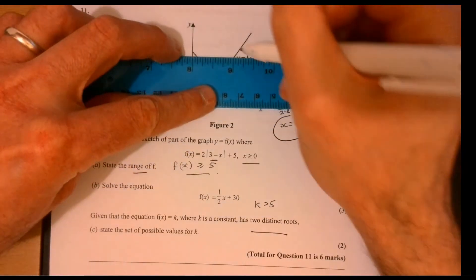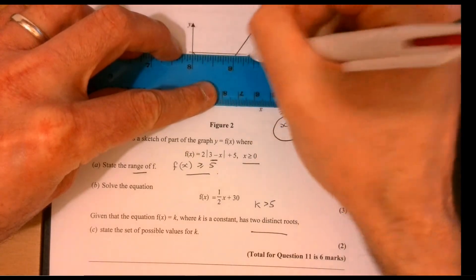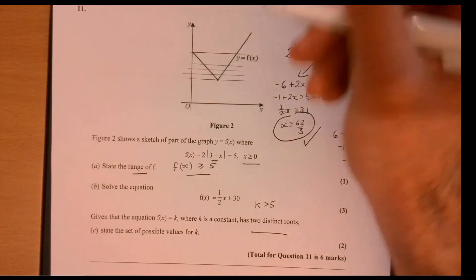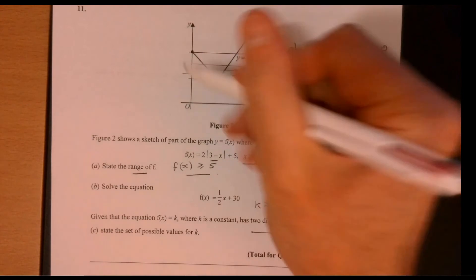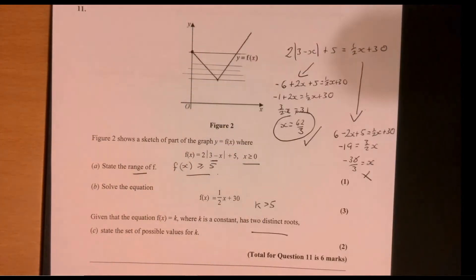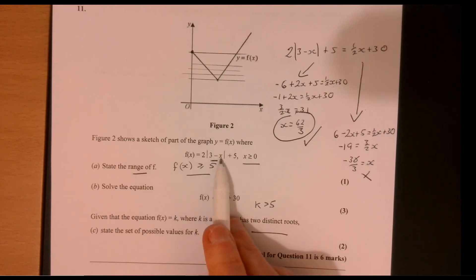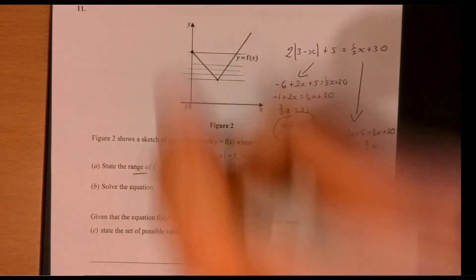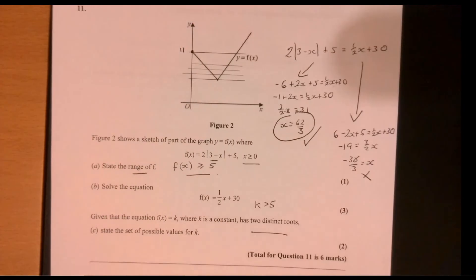And then it can go up to the highest it can be. It's at this point here. And also it includes it. So I need to work out this point here. And that's when x is equal to 0. So if x is 0, 3 take away 0 is 3 times 2.